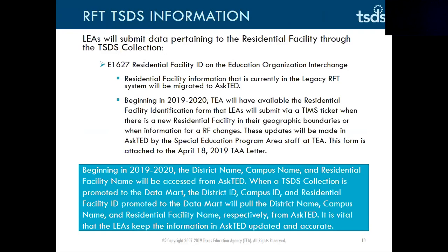Beginning in the 2019-2020 school year, the district name, campus name, and residential facility name will be accessed from ASTED. When a TSDS collection is promoted to the data mart, the district ID, campus ID, and residential facility ID promoted to the data mart will pull the district name, campus name, and residential facility name respectively from ASTED. It is vital that LEAs keep the information in ASTED updated and accurate.